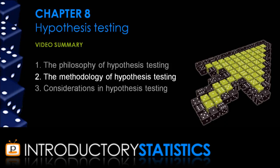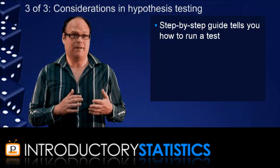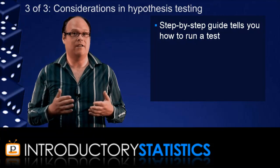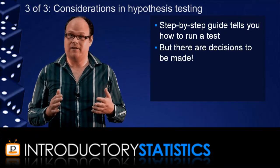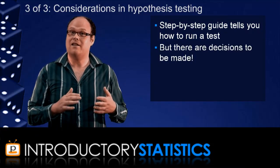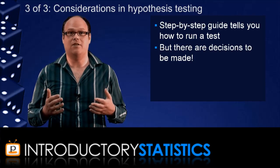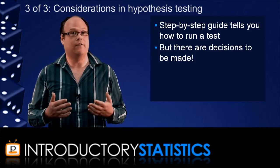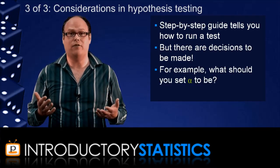To finish this summary, I'll talk a bit about the considerations that a statistician can have when conducting a hypothesis test. We were just looking at a step-by-step guide, and that will tell you how to run a test. But there are some decisions in that guide, and statisticians need to know how to make those decisions. A big example is the level of significance, alpha. What value should you choose?